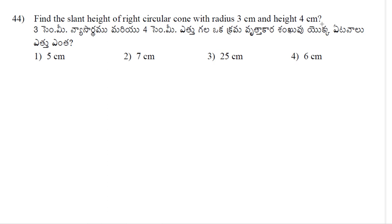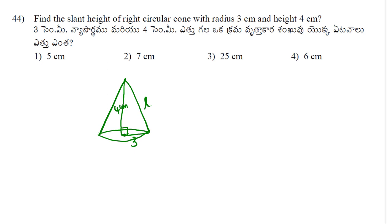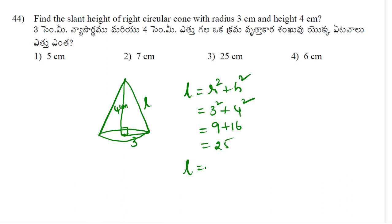Find the slant height of a right circular cone with radius 3 cm and height 4 cm. Using the Pythagorean theorem: l² = r² + h² = 3² + 4² = 9 + 16 = 25. So l = √25 = 5 cm. Slant height is 5 cm. Option 1 is correct.